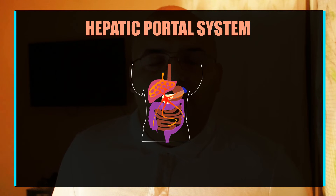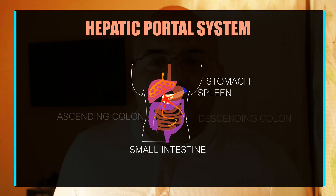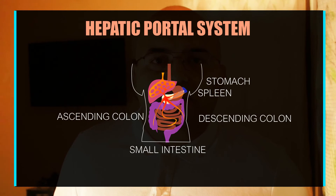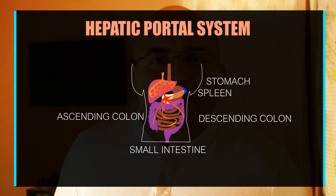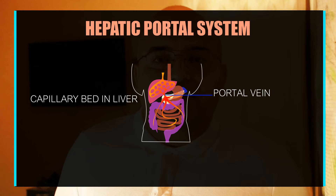Veins arise from different organs of the abdomen like the stomach, spleen, small intestine, ascending colon, descending colon, etc. The capillary beds present in these organs form veins which unite to form a portal vein. This portal vein reaches the liver and again forms capillary beds, supplying the liver with different nutrients and blood.